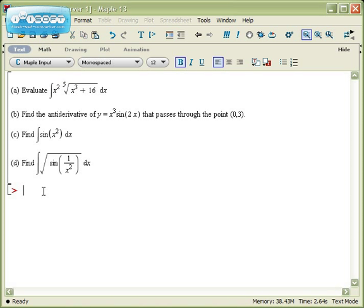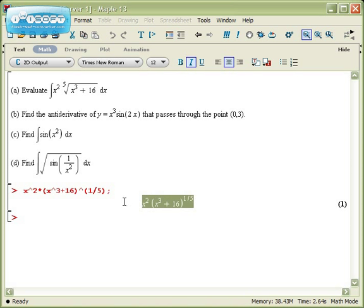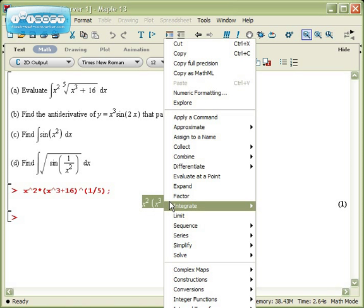So for part a, the function is x squared times the fifth root of something. Well, that would be x cubed plus 16 raised to the power of 1 over 5. So there's the function, x cubed plus 16 to the 1 fifth times x squared. Now I'll select it, right click and get the context menu.